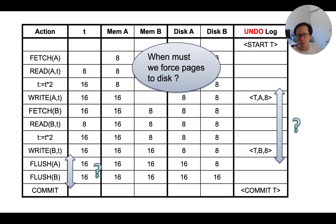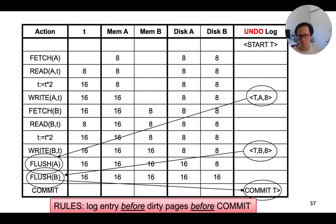It is crucial that we write the dirty data pages to the disk before we write the commit record to the log. Consider what will happen if the commit record was written to the disk before the dirty data pages. In that case, we would have considered this transaction to have committed, even though the dirty data pages had not actually made it to the disk. During recovery, we would consider it committed and lose the values for A and B forever, which is bad.